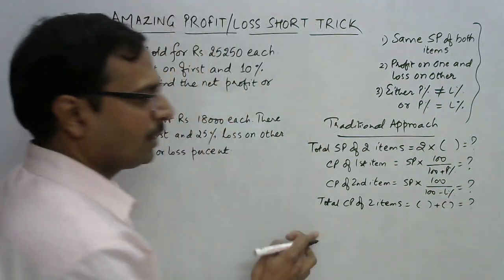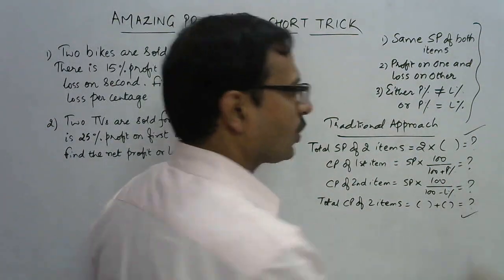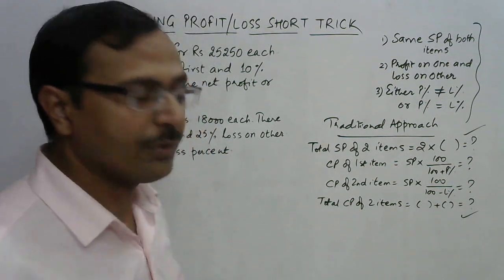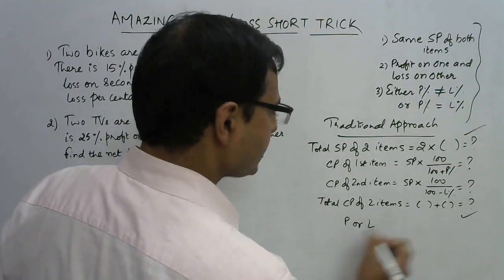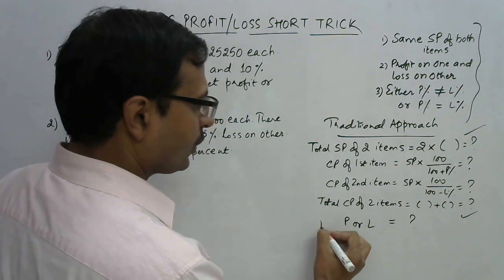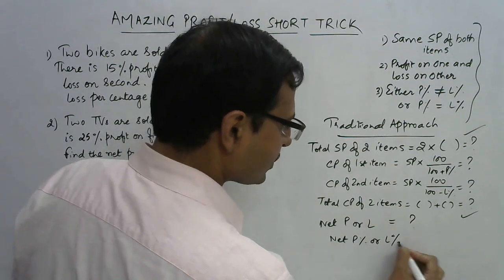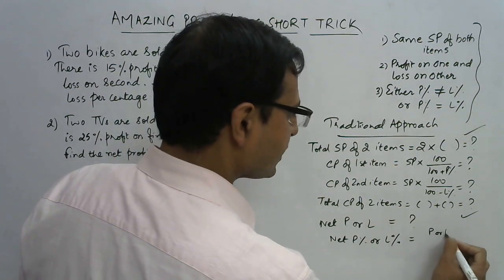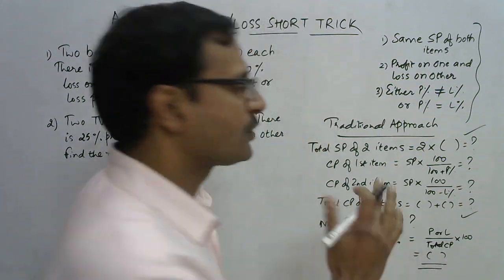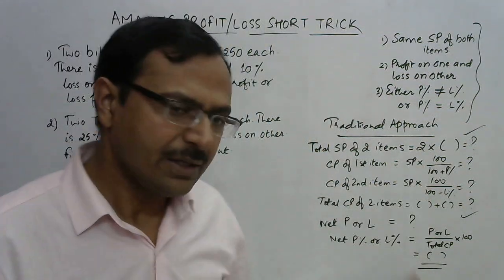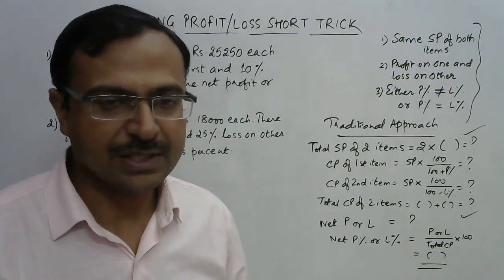After finding the cost prices of both items, we add them to get the total CP of the two items. Then having the total selling price and total cost price, we find whether there is profit or loss by subtracting them. Finally, net profit or loss percent = (profit or loss / total CP) × 100. That's the traditional approach — quite lengthy, and especially complicated when it involves decimals or fractions.